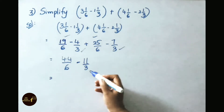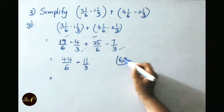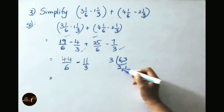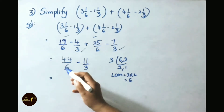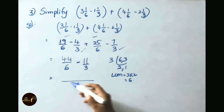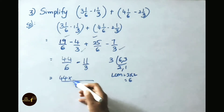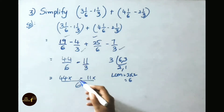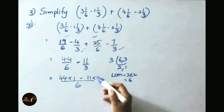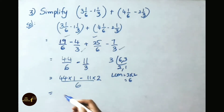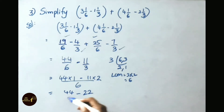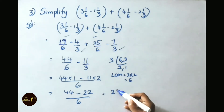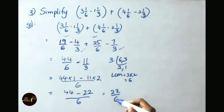That equals 44 by 6 minus 11 by 3. Let us find the LCM of 6 and 3, which is 6. Writing the numerators: 44 times 1 minus 11 times 2, all over 6. That equals 44 minus 22 by 6, which is 22 by 6.